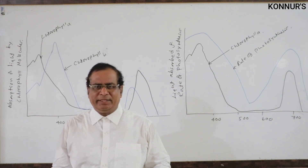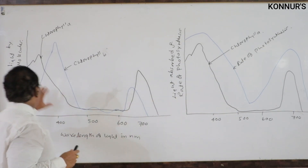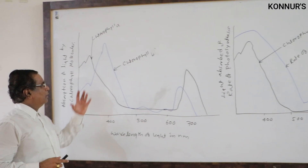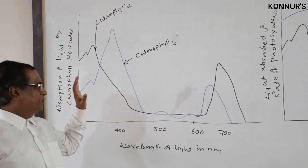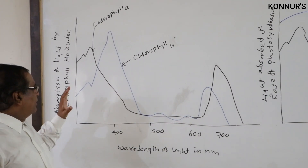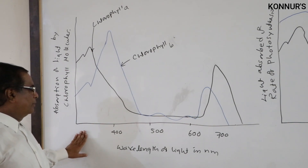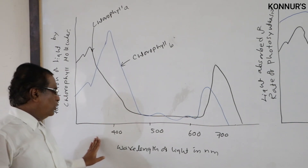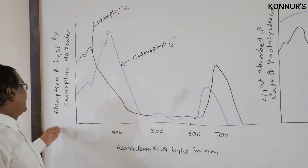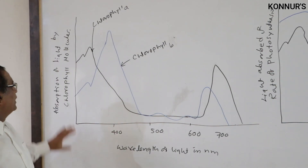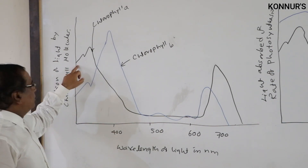In the first graph, the absorption rate of photosynthetic pigments is shown. We plot wavelength of light along the x-axis and absorption rate along the y-axis.